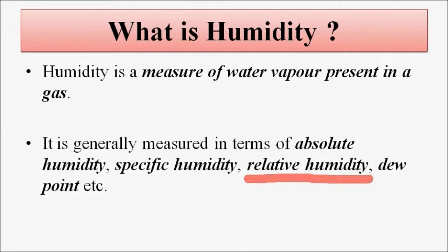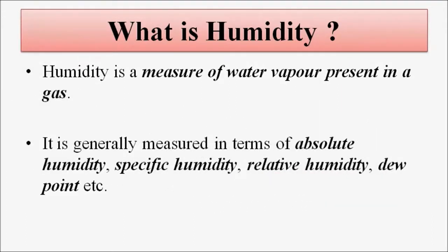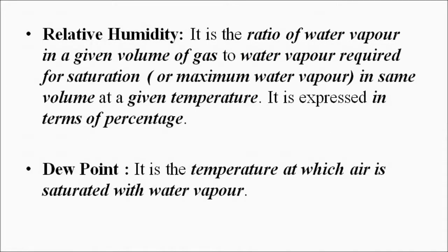Relative humidity is very important when it comes to sensors and transducers related to measurement of humidity. Relative humidity is basically the ratio between the water vapor present in a given volume of gas to the amount of water vapor required for saturation — that is, the maximum water vapor holding capacity of that gas at that particular temperature. It is given in terms of percentage values, and most hygrometers give output in terms of relative humidity.